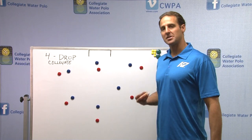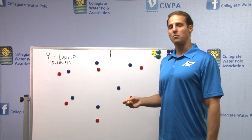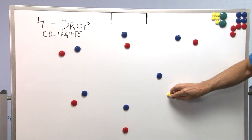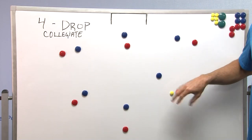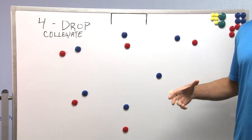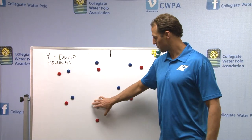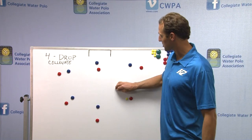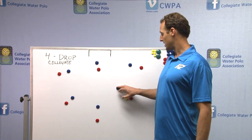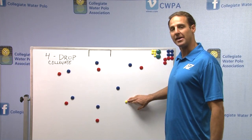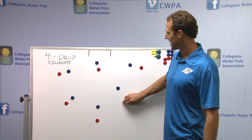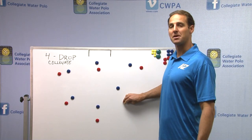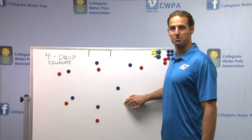One thing I like to do is have my strongest or one of my strongest shooters play this position over here in the pool. A lot of teams, when they run a zone, will do a drop from 3-4, 4-5 from the weak side — a 4-drop. Because if this is a right-hander, this is the worst angle in the pool, and if you're going to leave someone, you want to leave this player more.